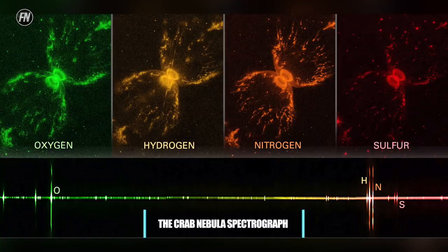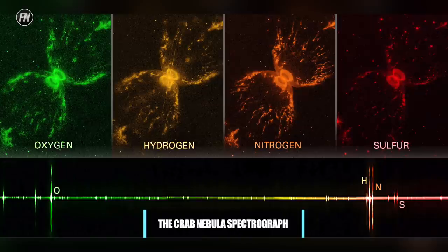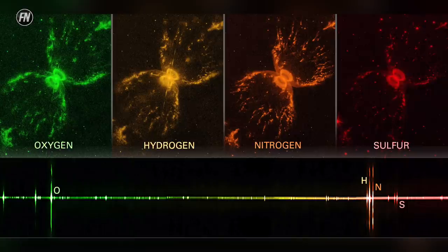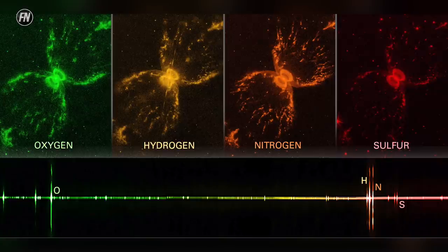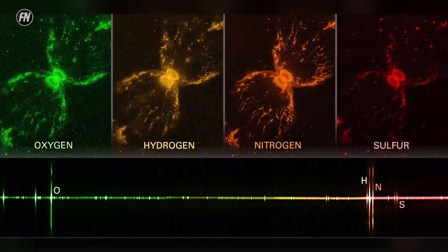The Crab Nebula Spectrograph. Art isn't all about realism, and sometimes beauty can be abstract. This image shows the hourglass-shaped southern aspect of the Crab Nebula, separated into specific wavelengths of light, sorted by the emissions from hydrogen, sulfur, oxygen, and nitrogen.